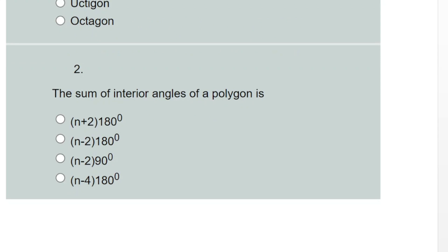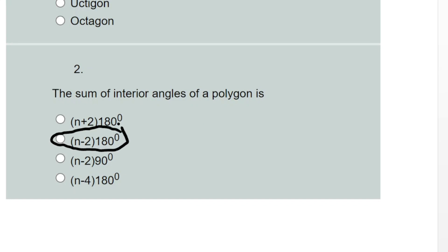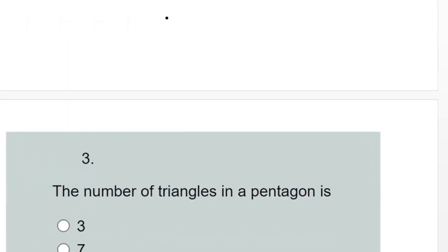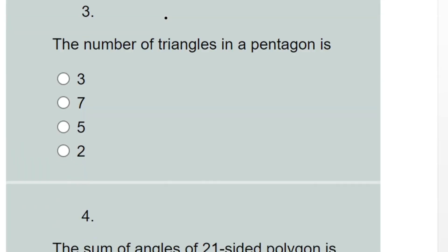The second question asks for the sum of interior angles of a polygon. The formula we use is (n minus 2) times 180 degrees. That covers question two.